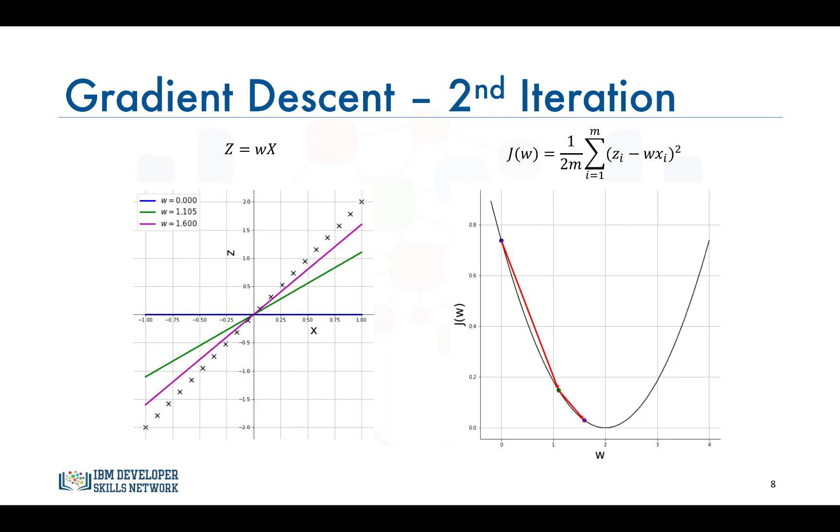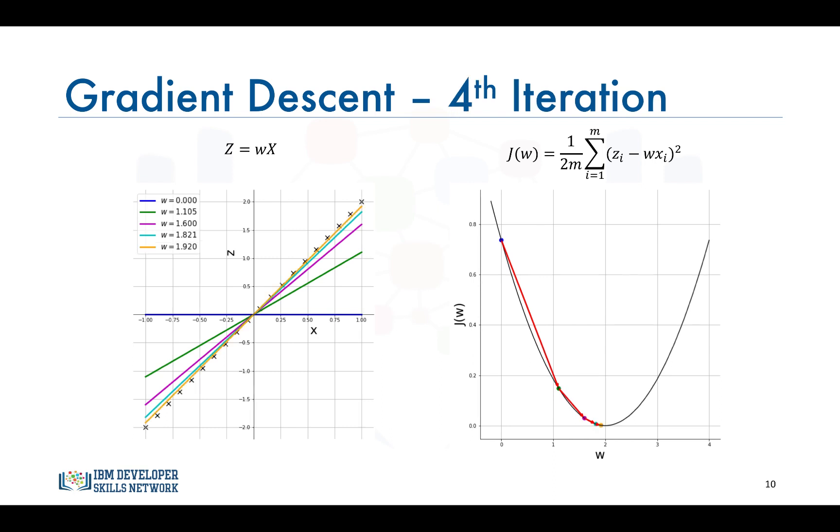After the second iteration w continues moving toward w equals 2. Because the slope is not as steep as before the step is not as big, but the cost function still drops in value and the resulting line is moving closer to the ideal best fit line. The same observation is noted with the third iteration and the fourth iteration. After four iterations you can see how we're almost there at w equals 2 and the resulting line almost fits the scatter plot perfectly.